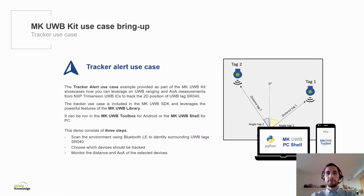The shield sends notifications of distance readings from each of the tags that are ranging, as well as the threshold at which they are located. The tracker use case, provided as part of the MKUltra Wideband Kit, showcases how customers can leverage ultrawideband ranging and angle of arrival to track the 2D positions of ultrawideband enabled devices or tags. This demo consists of three steps: scan the environment using Bluetooth Low Energy to identify surrounding tags; second, choose which tags should be tracked through the ultrawideband; and third, monitor the distance and AOA data of the selected tags.